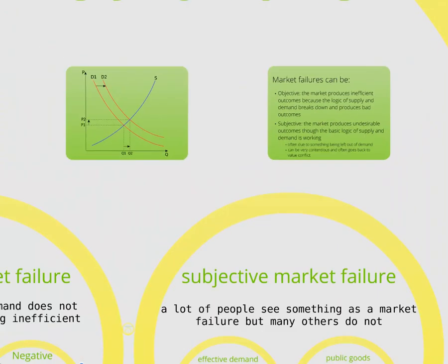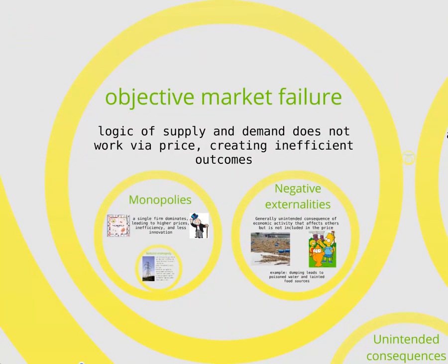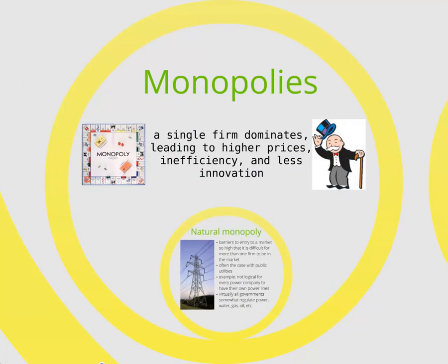Let's start with the objective ways markets can fail — when something occurs that makes the logic of the supply and demand curve break down, meaning price ceases to work as a good link between the two. This is what happens with monopolies. Monopolies are a situation in which a single firm controls the production, distribution, and/or sale of a particular product, forcing all others out of business and preventing new competitors from entering the market. This is a really bad thing from the point of view of the consumer, who can end up paying way more for that product.